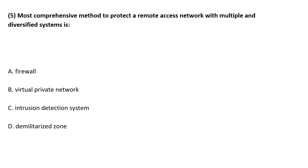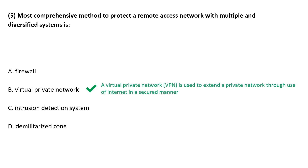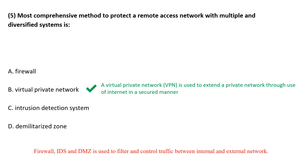Practice question: The most comprehensive method to protect a remote access network with multiple and diversified systems is a virtual private network. A VPN is used to extend a private network through use of the internet in a secured manner. Firewall, IDS, and DMZ are used to filter and control traffic between internal and external networks, but for remote access, VPN is more secured and more comprehensive.